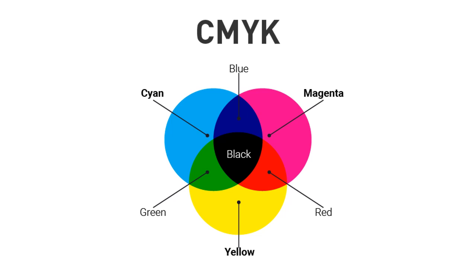CMYK stands for cyan, which is a kind of blue but not quite; magenta, which is a kind of red but not exactly; and yellow, which is definitely yellow. The combination of all those equals black. So black really isn't a color either — it is either the combination of all the colors in the physical world, or the absence of color in the world of light.